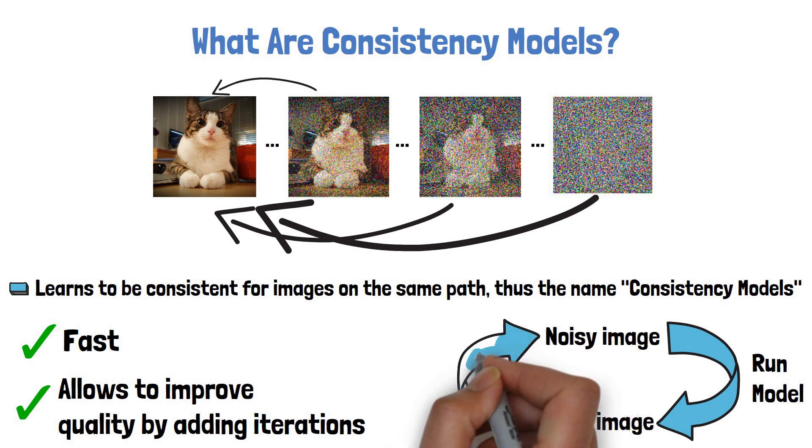Then we add a bit of random noise to it and get a noisy image again. We then repeat the process for as many iterations as we want, and according to the consistency model research paper, this should yield better results.